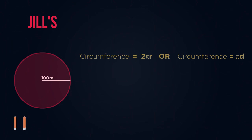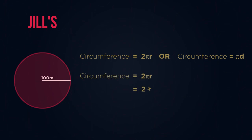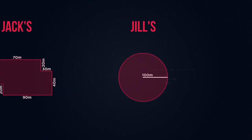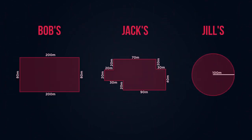Pause the video and work out the circumference of Jill's field to find the perimeter. Did you get 628 metres for the amount of fence Jill needs? So now the three farmers know how much fence to buy.